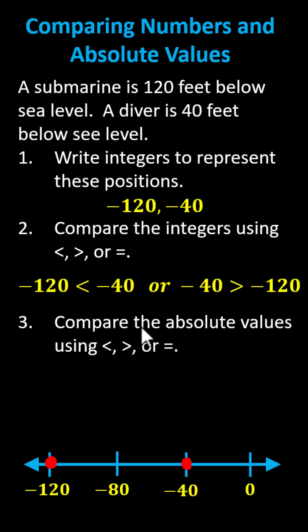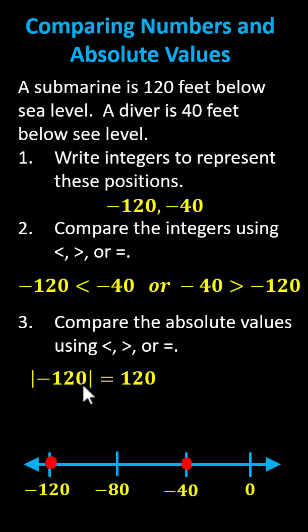Number three: we're asked to compare the absolute values using less than, greater than, or equals. Recall that the absolute value of a number is the number's distance from zero. Negative 120 is 120 units from zero, indicating the absolute value of negative 120 equals 120. And negative 40 is 40 units from zero, indicating the absolute value of negative 40 equals 40.